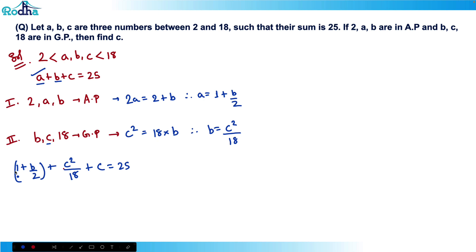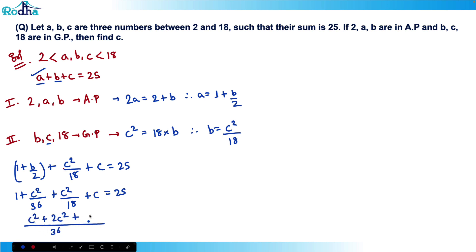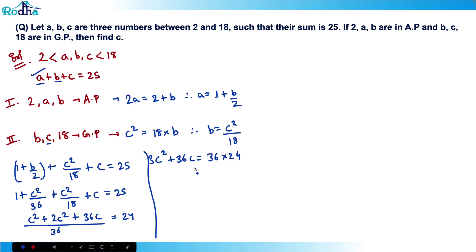Simplifying: 1 + c²/36 + c²/18 + c = 25, so c²/36 + 2c²/36 + c = 24. Taking LCM of 36: (c² + 2c²)/36 + c = 24, giving 3c²/36 + c = 24, that is c²/12 + c = 24. Multiplying through by 12: c² + 12c = 288, so c² + 12c − 288 = 0.